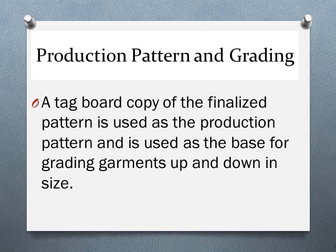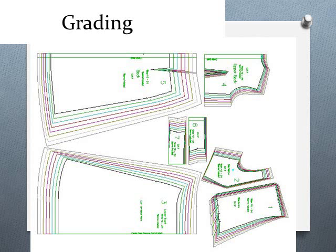The production pattern is the finalized tag board copy used for production and as the base for grading garments up and down. Grading is the process of taking your sample size — whatever size your original pattern is made in — and making it bigger or smaller. Ideally your original pattern piece sits in the very middle of your target market's size range, and you grade up and down from there to make more sizes of the same style.